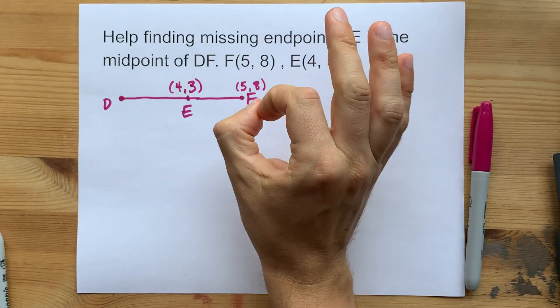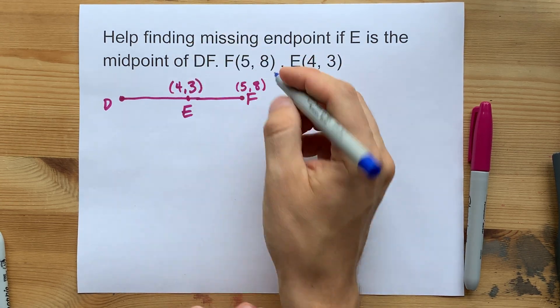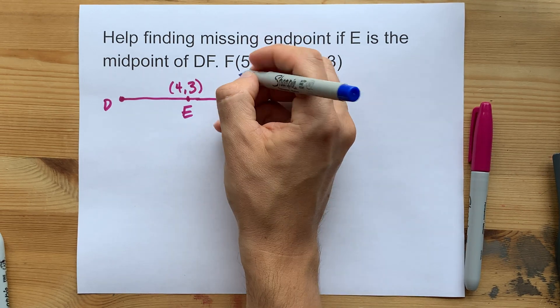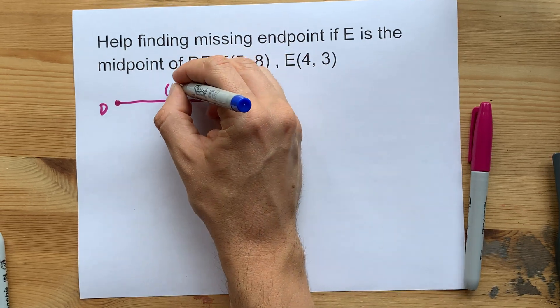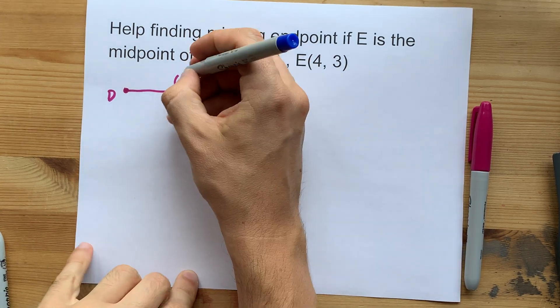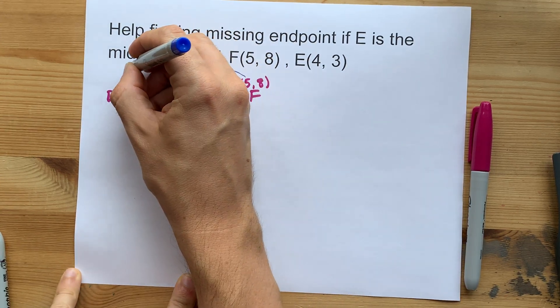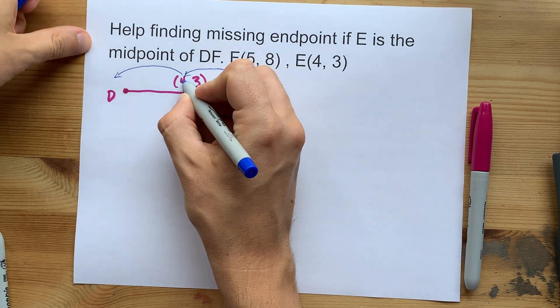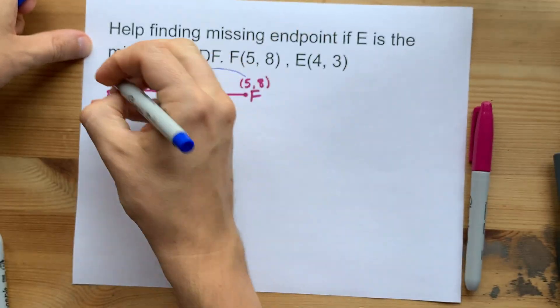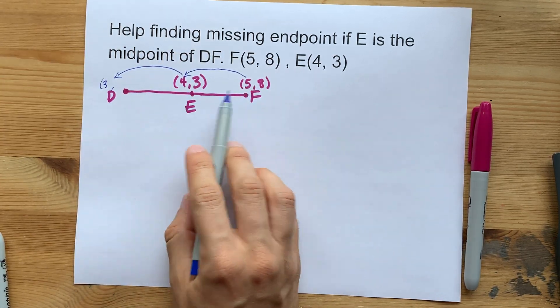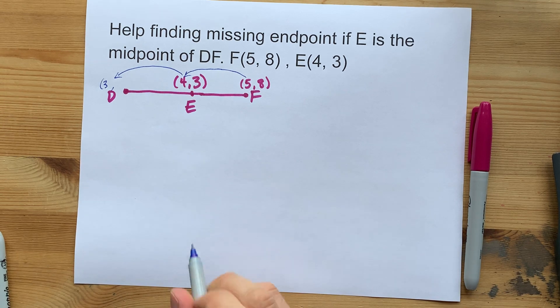Now, the trick is that however X and Y have changed to get you from one endpoint to the midpoint, in this case five becomes four, you want to do that exact same change to get from the midpoint to the other endpoint. Five goes down to four, which goes down to three. It's a pattern because the midpoint is by definition in between the two.